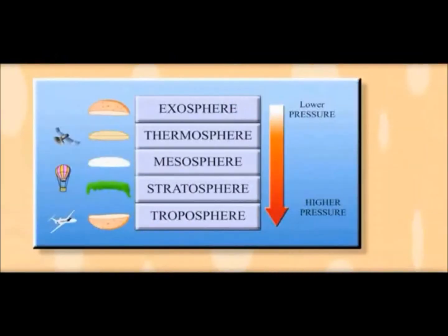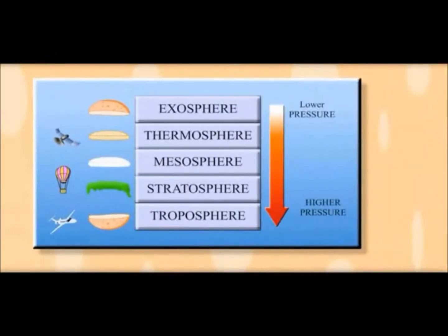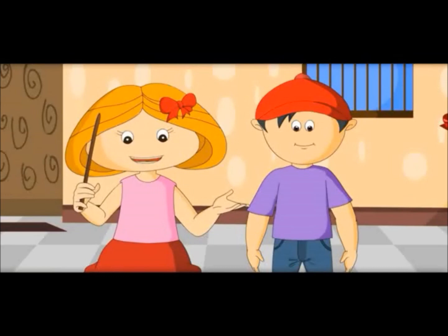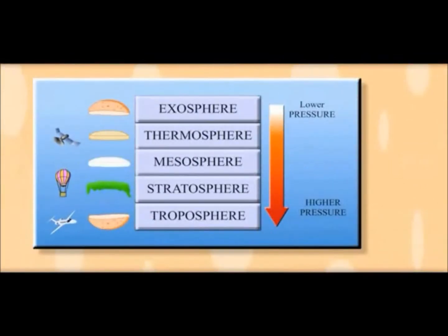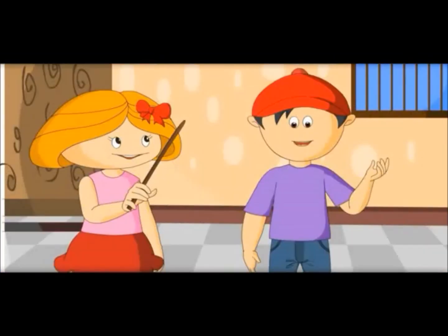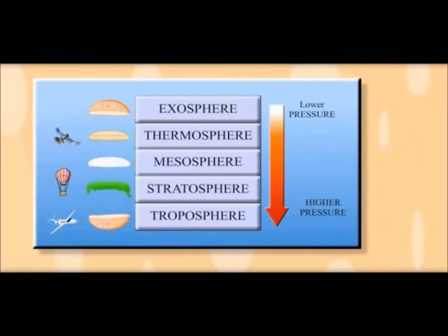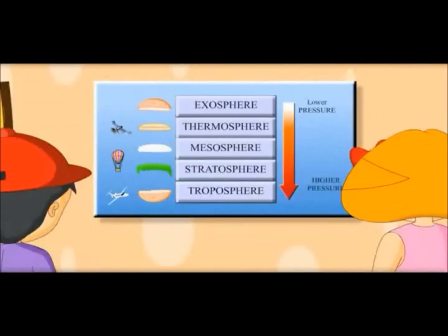Air is heaviest at the bottom layer and thinnest at the top layer. See this chart — air pressure is high at the bottom layer and very low at the highest layer. Air molecules are close to each other at the bottom layer and very far apart in the upper layer. That is why air is lighter at the top and heavier at the bottom.